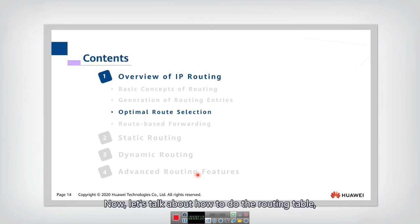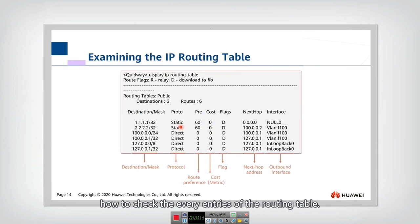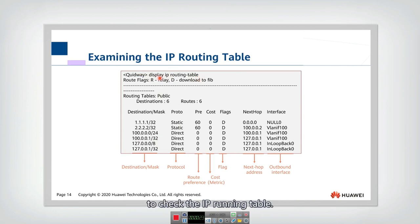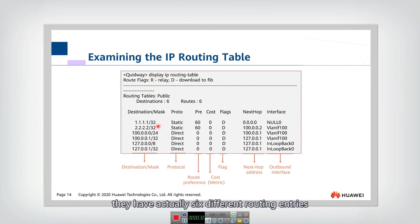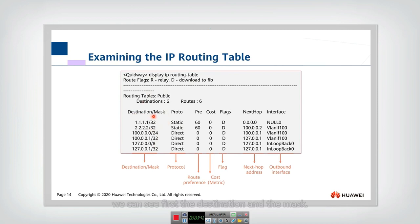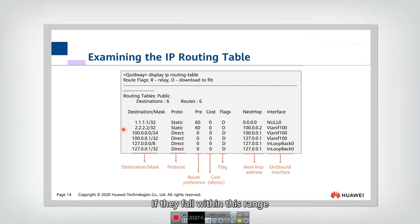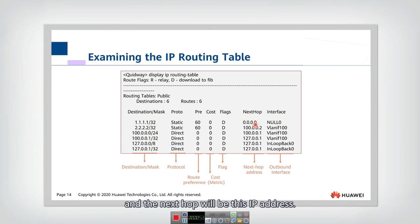Let's talk about how to check every entry of the routing table. We can use the 'display IP routing table' command to check the IP routing table. For this router, there are six different routing entries. For each routing entry, we can see the destination and the mask, which identifies the IP address range of the destination. If they fall within this range, they can go from this interface and the next hop will be this IP address.